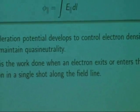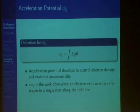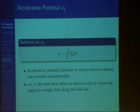In two-dimensional plasmas, something called the acceleration potential has been created to parameterize the effect of the electric field. The acceleration potential usually develops to control the electron density and maintain the quasi-neutrality, and is often denoted as phi-parallel, and the definition is shown here. The acceleration potential is often called a pseudo-potential, and this is because when phi-parallel is multiplied by the charge of an electron, it measures the work done when an electron exits or enters the reconnection region in a single shot along the field line.